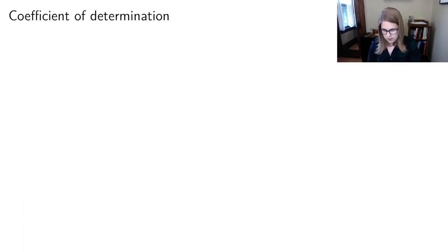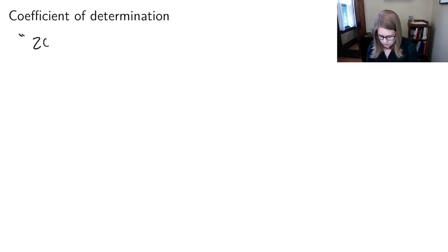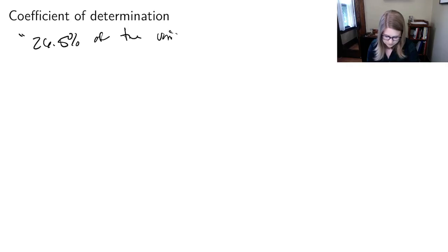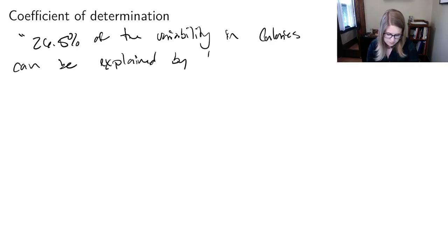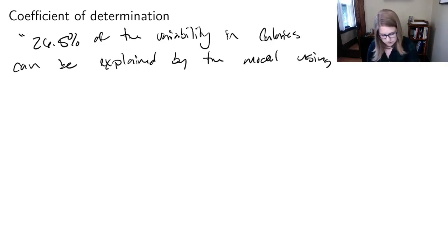So we could say: 26.5% of the variability in calories can be explained by the model using sugar as a predictor.